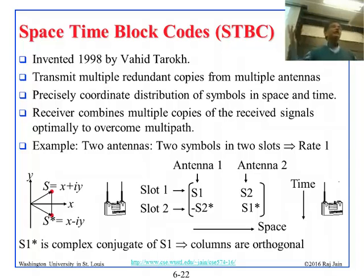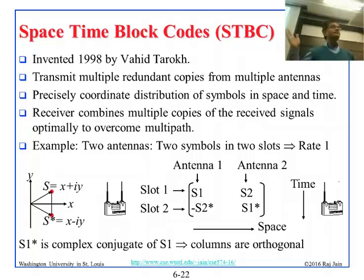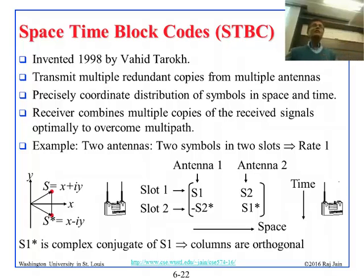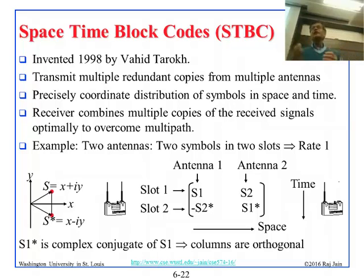Now you see the advantage of this. You don't gain anything in the rate — this is rate-1 coding. Rate-1 coding means you don't gain in throughput. Sometimes you can gain by this kind of method, particularly when you are doing MIMO with two antennas. So this is rate 1, but it reduces the error significantly.